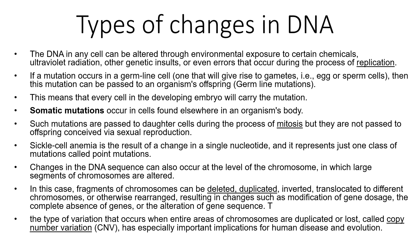Somatic mutations occur during mitosis. One example I'm going to discuss in the next few slides is sickle cell anemia, which results from a change of a single nucleotide. It's what you call a point mutation because only one base has been changed.